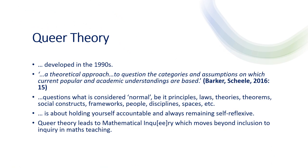Queer theory arose in the 1990s and, according to Barker and Gile, it is a theoretical approach to question the categories and assumptions on which current popular and academic understandings are based. It questions what is considered normal — be it principles, laws, theories, theorems, social constructs, frameworks, people, disciplines, spaces, and so on. It is about holding ourselves accountable and always remaining self-reflexive. Taking a queer theory approach means trying to stand on shifting ground — never stable, never comfortable with the status quo or with stereotypical social constructs.